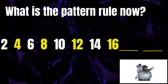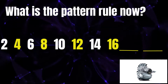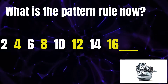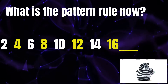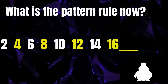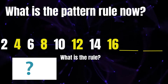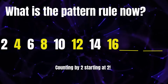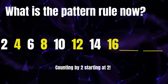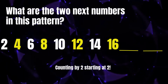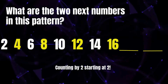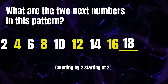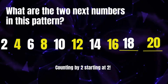Six, eight, ten, twelve, fourteen, sixteen. What's the rule? Counting by two, starting at two. Great! What are the next two numbers in this pattern? Eighteen, twenty. Fantastic!